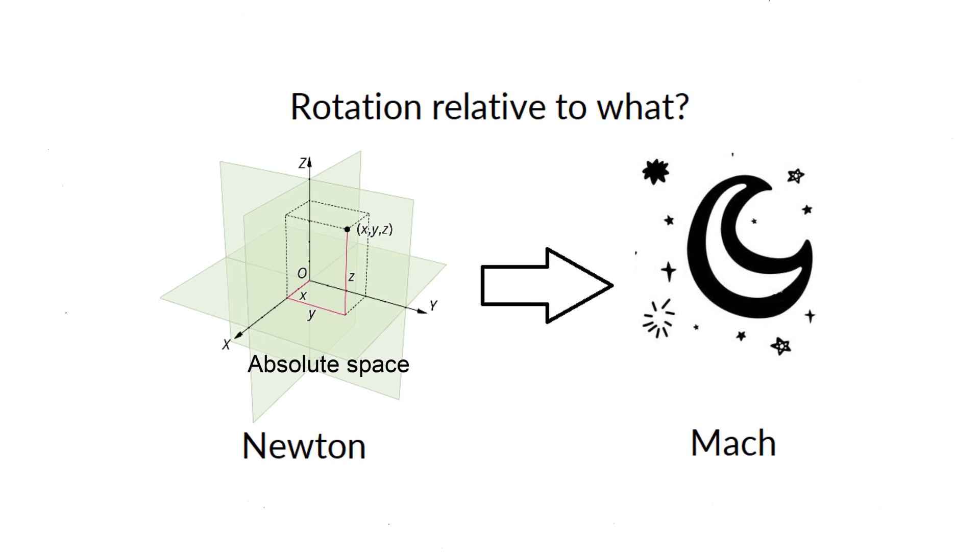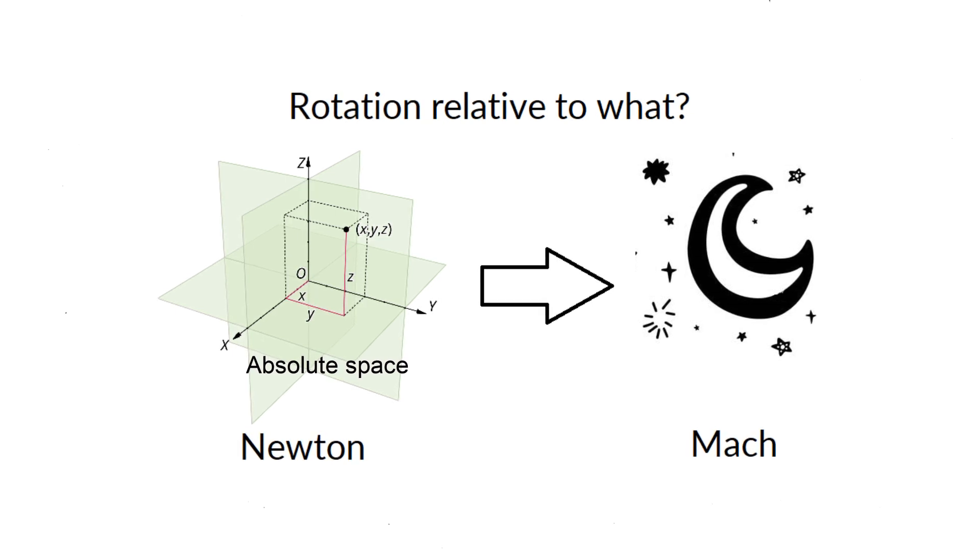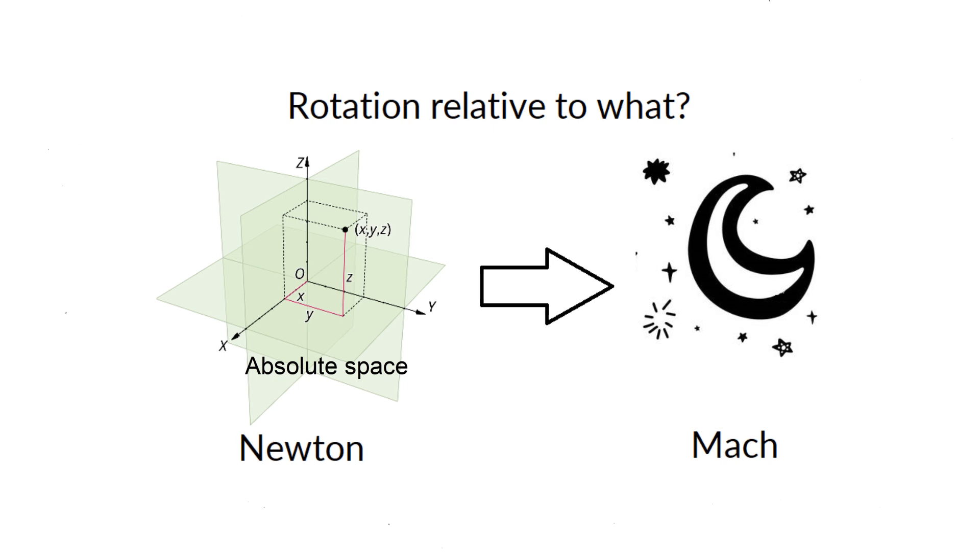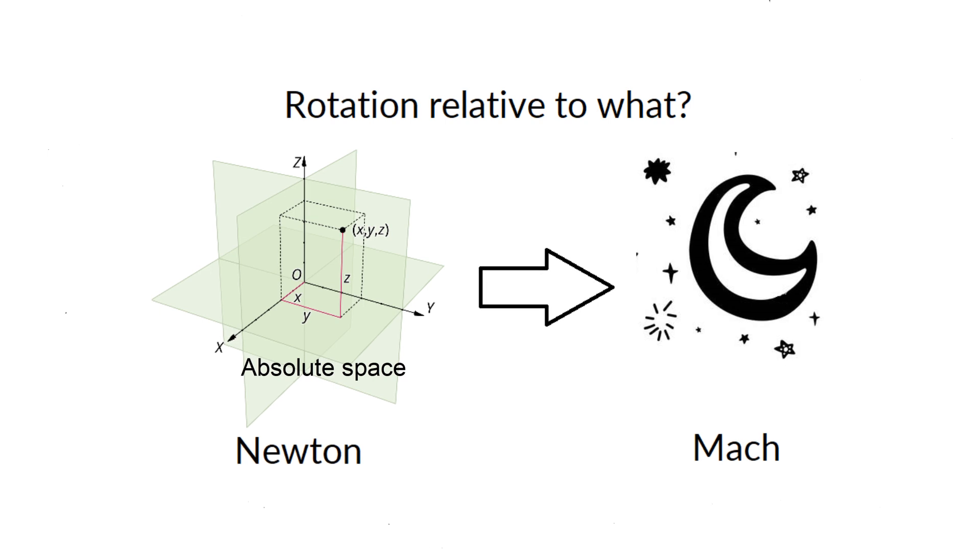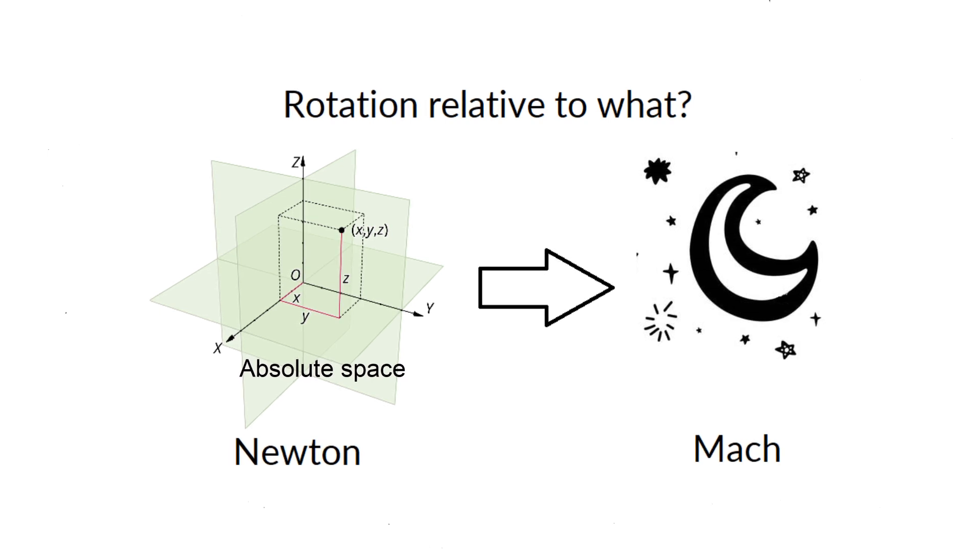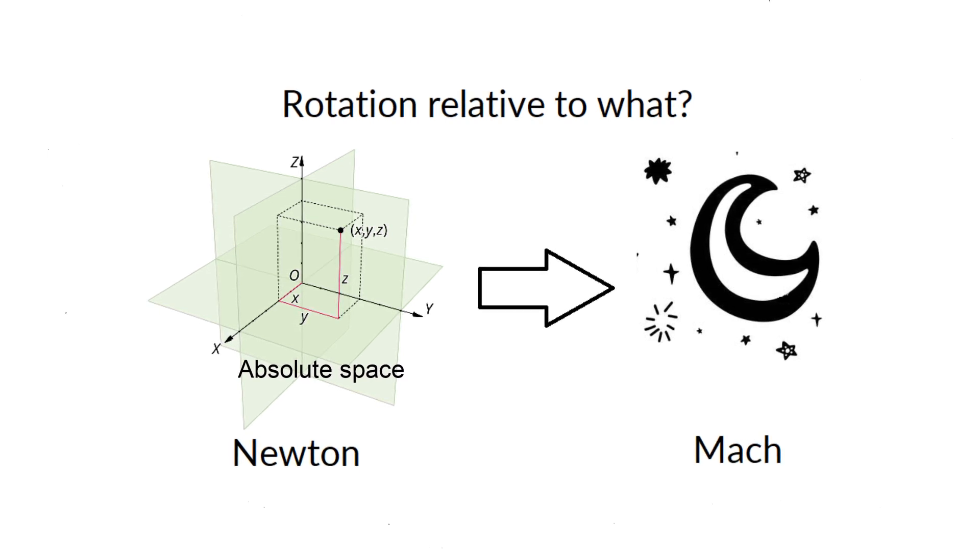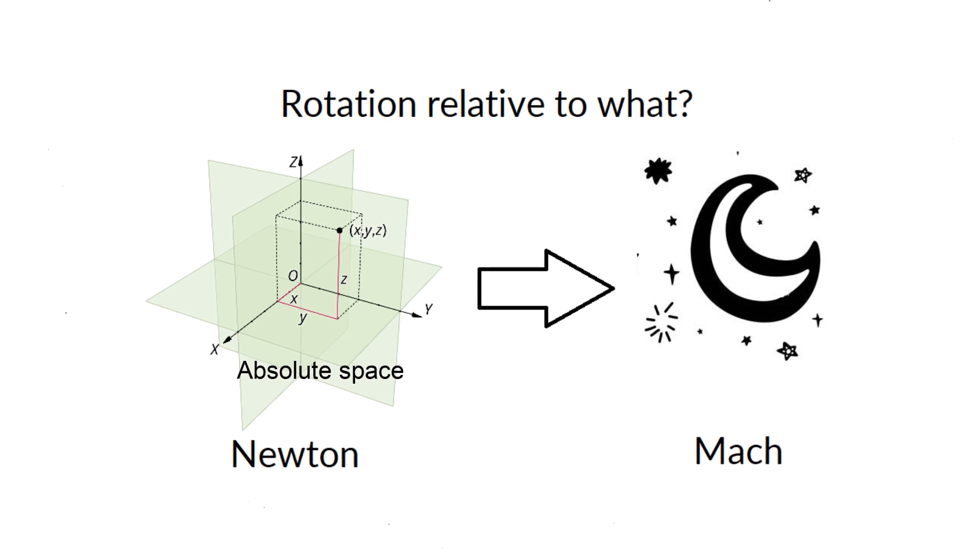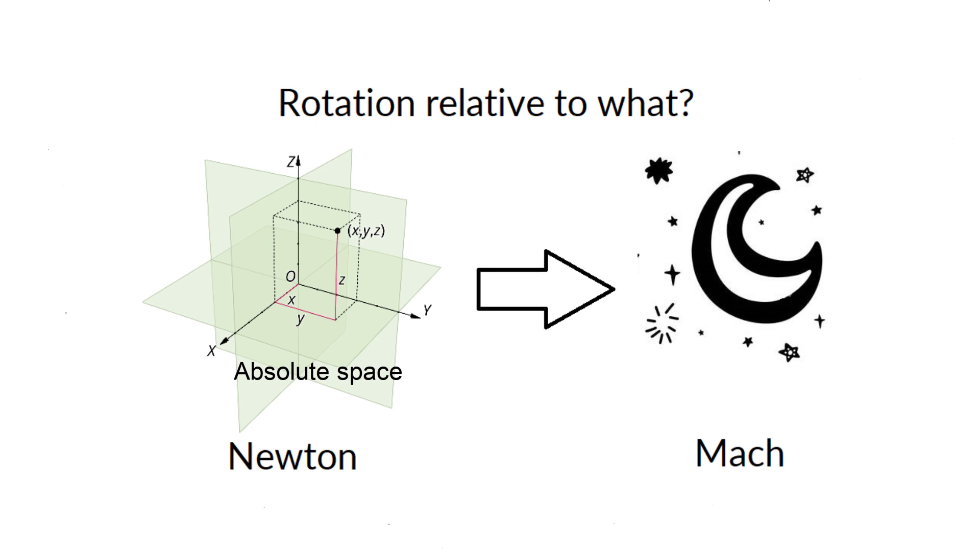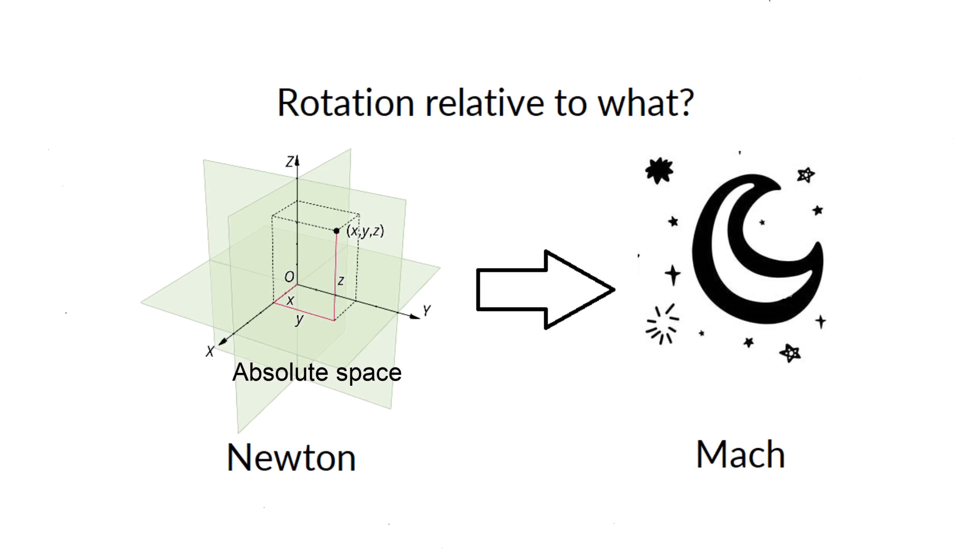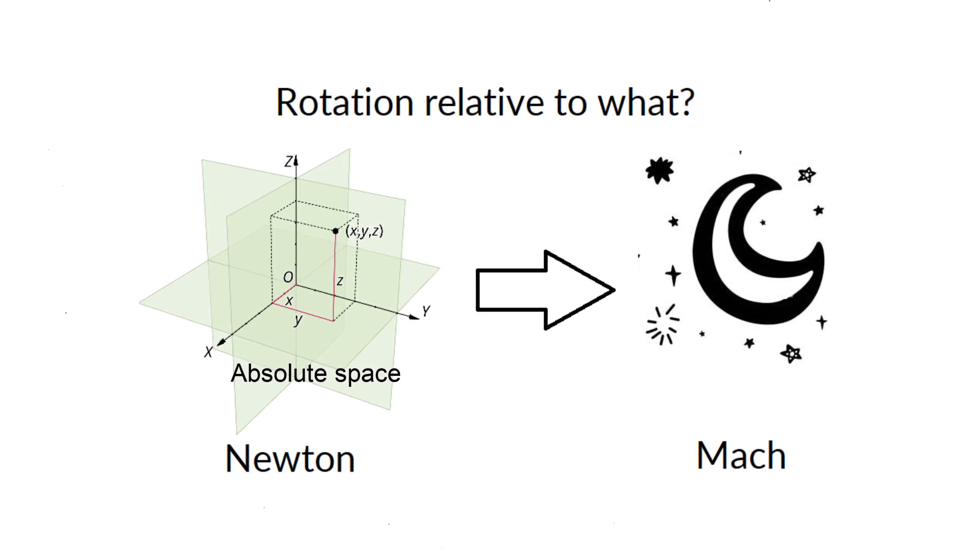In this way, the reference system with respect to which the universe is at rest or in uniform and rectilinear motion is a true inertial reference system. In Ernst Mach's words, I have remained to the present day the only one who insists upon referring the law of inertia to the Earth and in the case of motions of great spatial and temporal extent to the fixed stars.